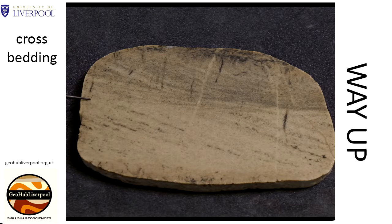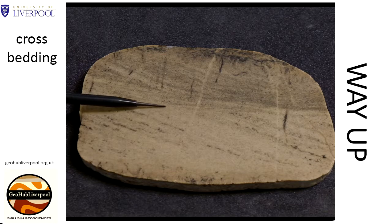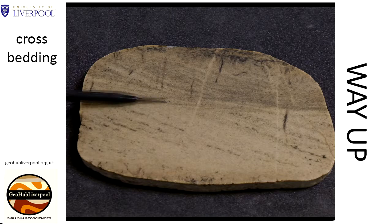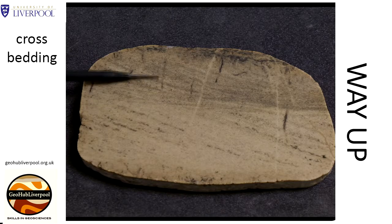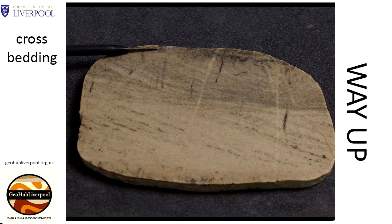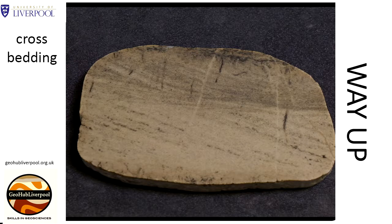Here you can see the sloping layers of sediment that form the cross bedding. They are sloping at an angle of about 20 degrees and the layers are gently curved. Along this line you can see a change in colour.